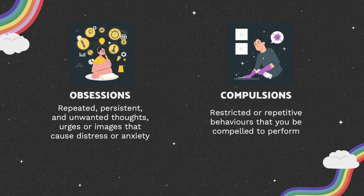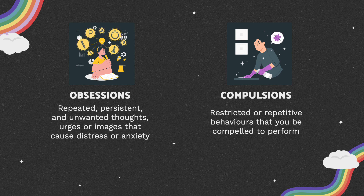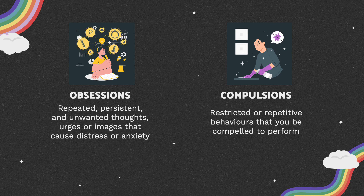OCD can be divided into two categories, and people can experience symptoms in one or both of them. Obsessions are defined as repeated, persistent, and unwanted thoughts, urges, or images that cause a person distress or anxiety. Compulsions are often a result of the obsession and can be defined as restricted or repetitive behaviors that one feels compelled to perform.